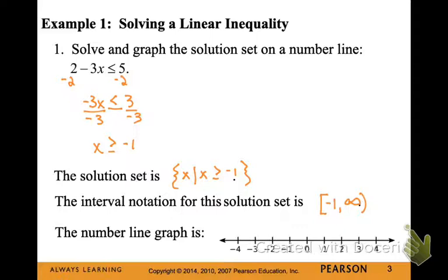On the number line, we're going to use those interval notation symbols. So instead of writing a closed circle at negative 1, we're going to write a squared-off bracket, showing that our solution can equal negative 1. Then we draw an arrow shading to the right to show positive infinity, and put an arrowhead at the end of our shading, showing that our solution will continue on infinitely in the positive direction.